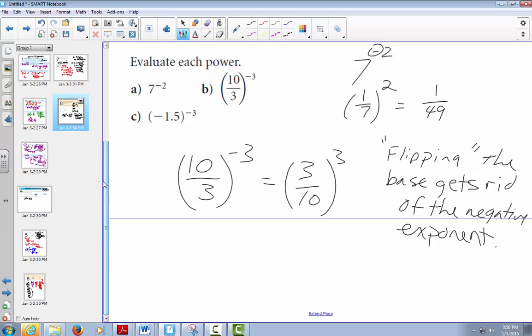So, still not done because now we have to do 3 to the power of 3 over 10 to the power of 3, which is 27 over 1,000. Two examples down. That one was B. That was A. And now we'll do C.